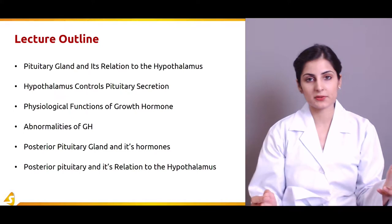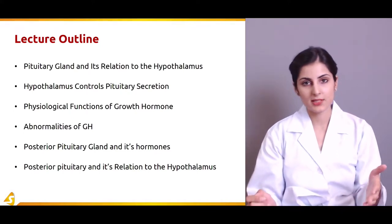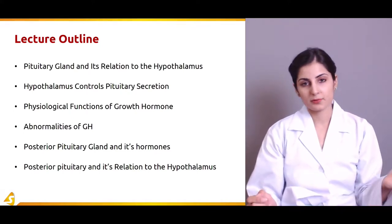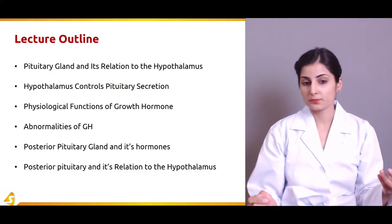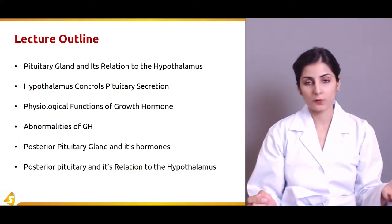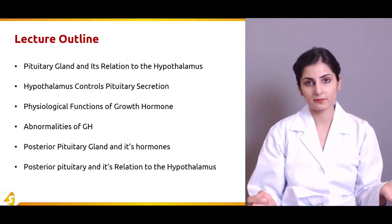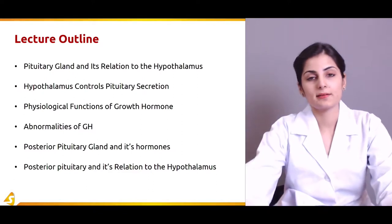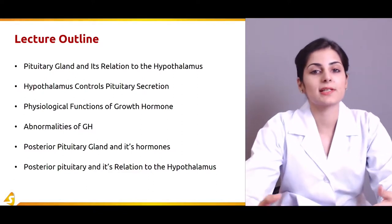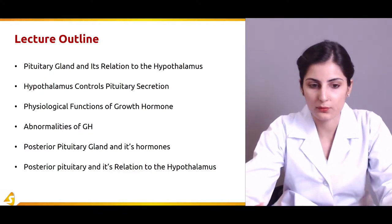We're going to discuss the relation between the hypothalamus and the pituitary gland, the functions of the most important hormone produced by the pituitary gland — which is the growth hormone — and then we are going to discuss the abnormalities related to the growth hormone.